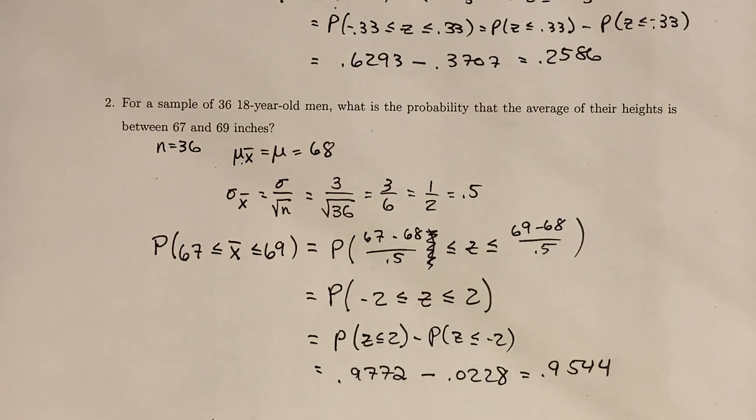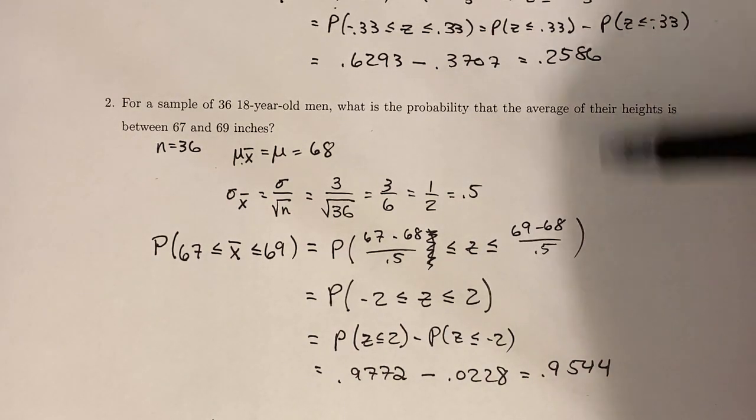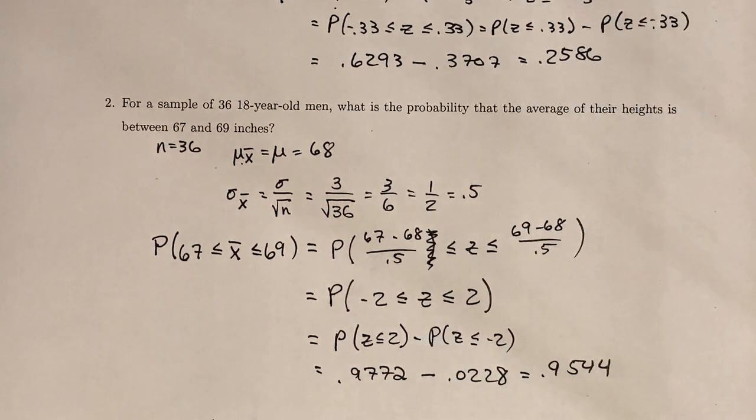Right. So that is a huge discrepancy. If you were to randomly select one person, the probability that their height is between 67 and 69 inches is about 26%. But if you were to take 36 people and find out the height of all 36 people, and then take the average of those heights, then there is about a 95% chance that the average of those heights is between 67 and 69 inches, which there's a huge jump here. That's a 70% jump between these two.